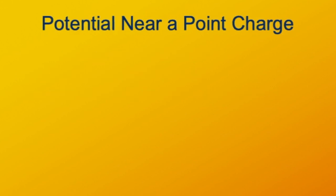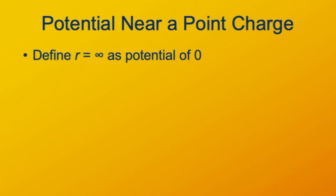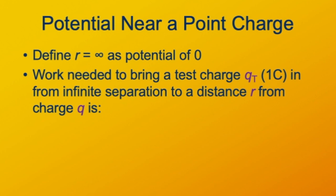Before, we talked about the field set up by an electric charge. So let's think about the potential around an electric charge. We define the potential at infinite distance from an electric charge as zero. Then the potential is the work needed to bring a test charge of one coulomb from infinite separation into some distance r from the charge. The work required is going to be k times q — the charge setting up the potential — times q sub t, the test charge, typically numerically one coulomb, divided by the radius.